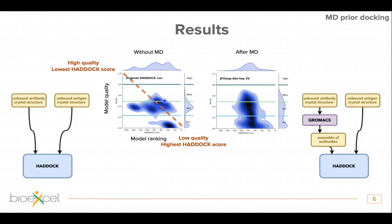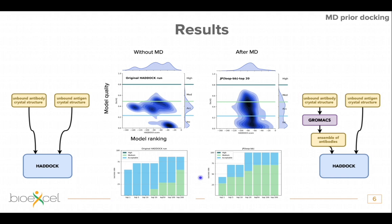After MD, we see that we have more models in the medium quality field, which is quite an improvement. However, the score remains problematic — if you have a HADDOCK score of minus 80, you don't really know if your model is good or bad. Looking at results differently, in which of the top X clusters you would have at least one medium, acceptable, or high quality model: after MD we see a slight improvement, with more medium quality models in the top 10 and 20.